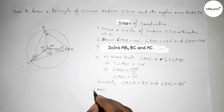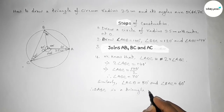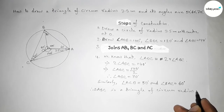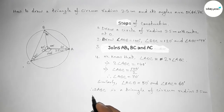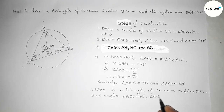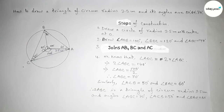By this way you can construct a triangle with angles 50 degrees, 60 degrees, and 70 degrees in an easy way. That's all — thanks for watching. If this video is helpful to you, please share it with your friends.